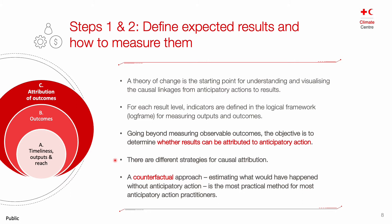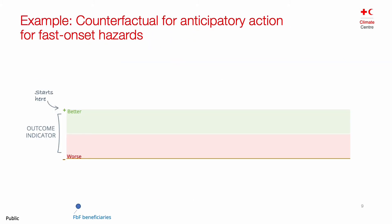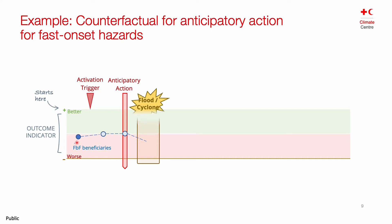There are different strategies for causal attribution. We have found that a counterfactual approach — estimating what would have happened without anticipatory action — tends to be a very practical method for most practitioners. This is a hypothetical example of what a counterfactual would look like for anticipatory action for fast-onset hazards such as floods or cyclones. The blue dot represents anticipatory action beneficiaries at any given moment in time, plotting an outcome indicator such as dietary diversity or health of family members. When the blue dot moves up, things are better; when it moves down, things get worse.